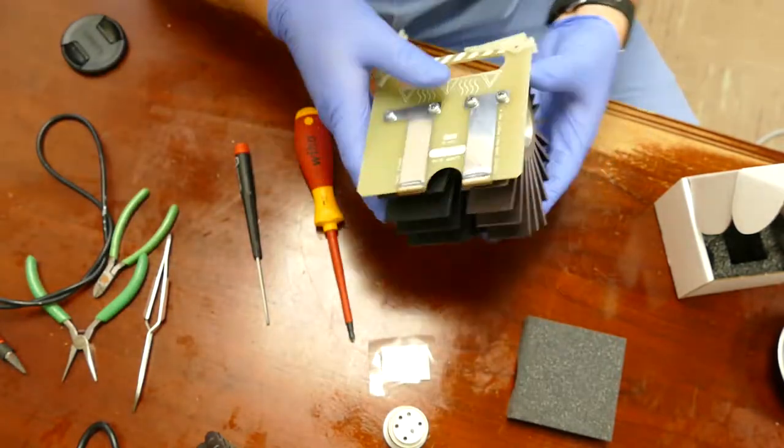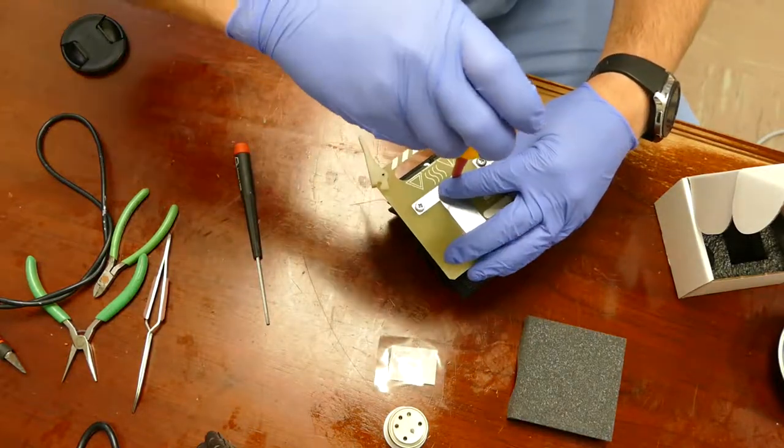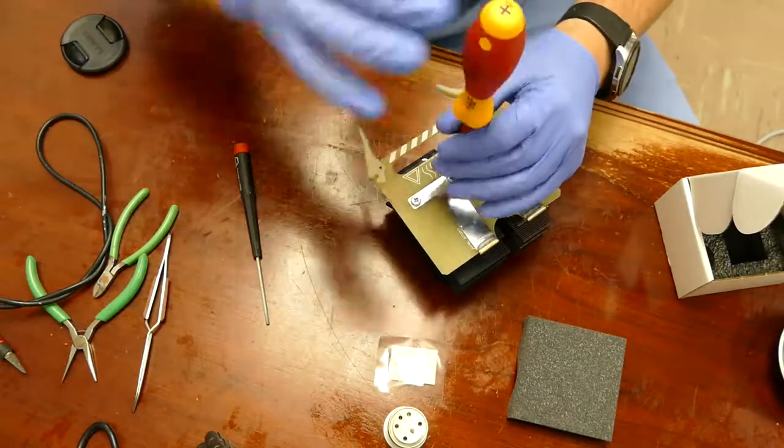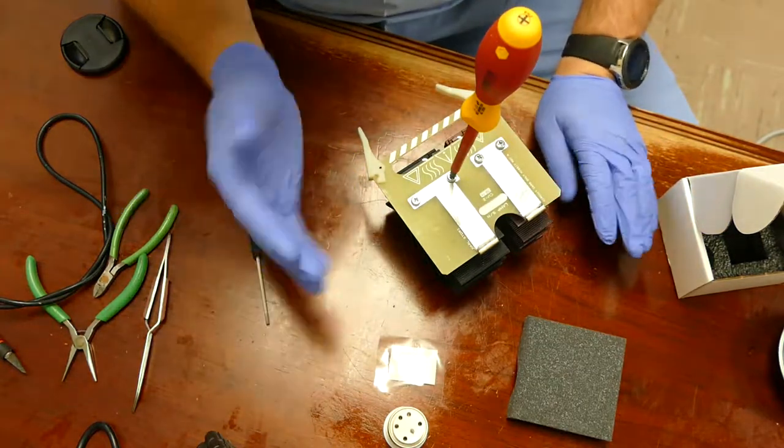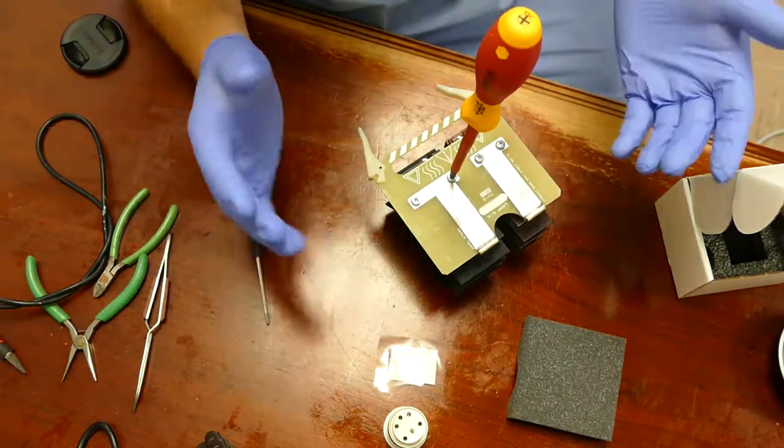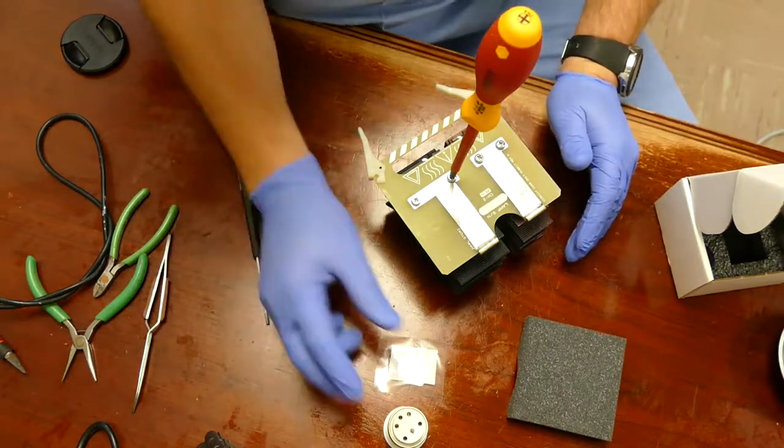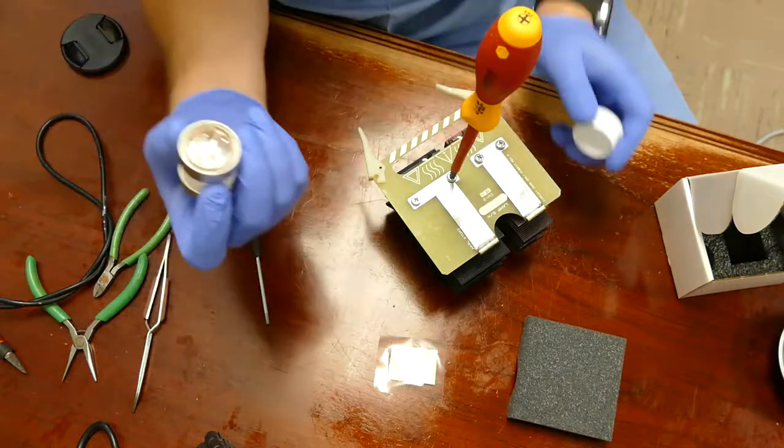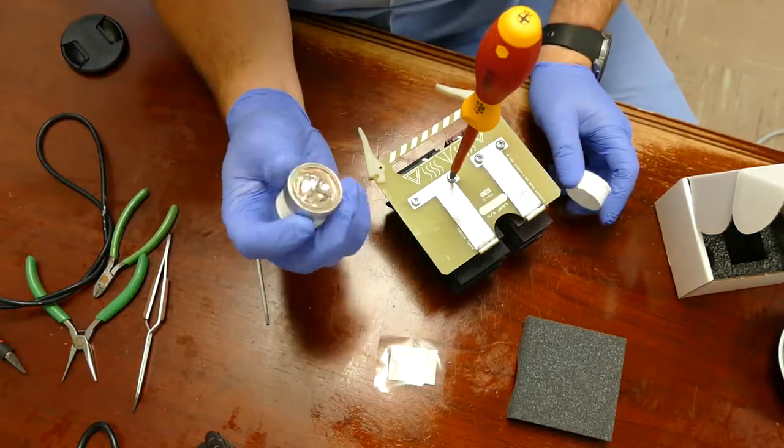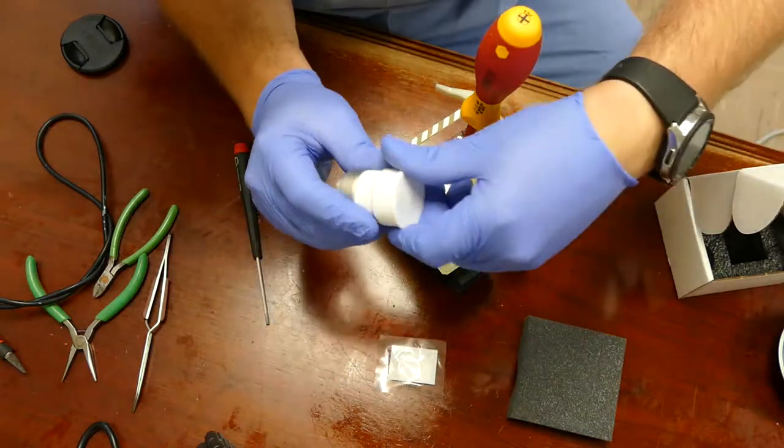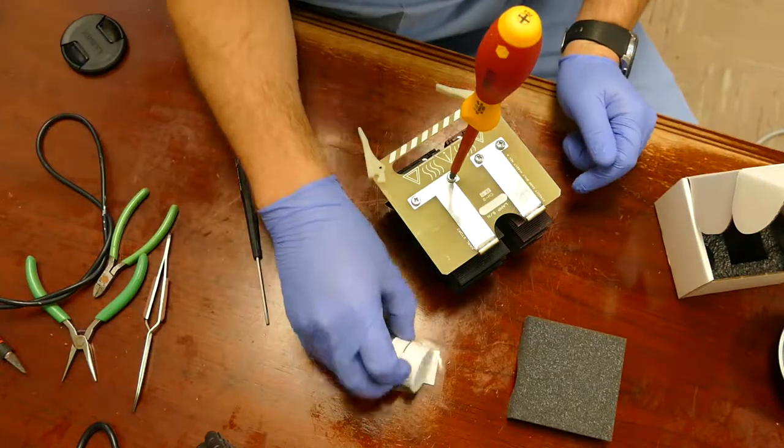The first thing that we're going to do is we're going to take off the card. Oh, by the way, you can see that I'm wearing gloves. Please wear gloves, not just because this is a mess and this is the easiest way to clean it up, but when you're handling bulbs, oils from the skin will destroy the face of a bulb. It'll create a hot spot. So always use nitrile gloves when you're handling bulbs.